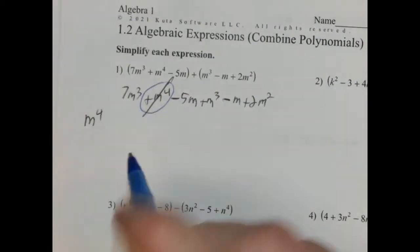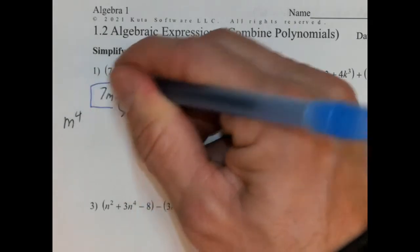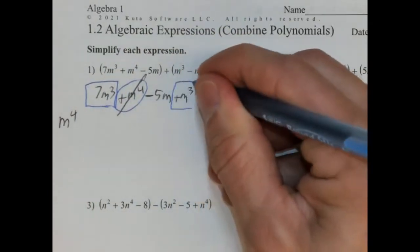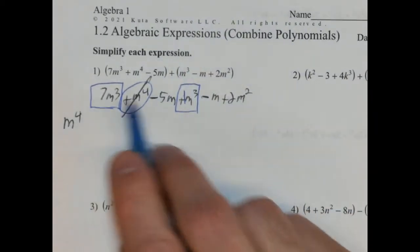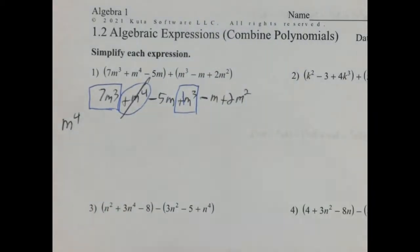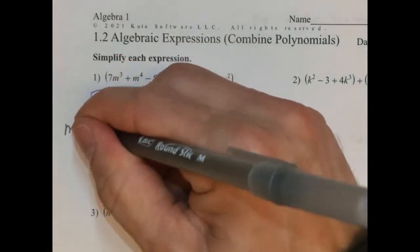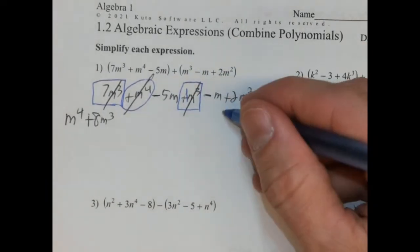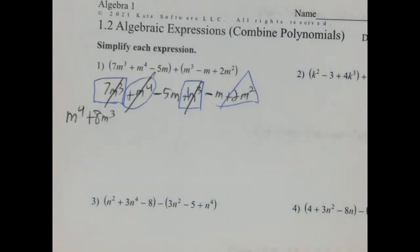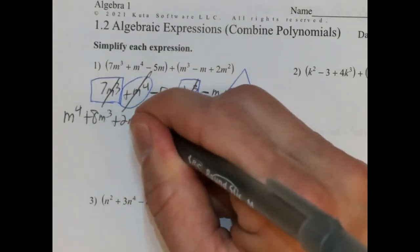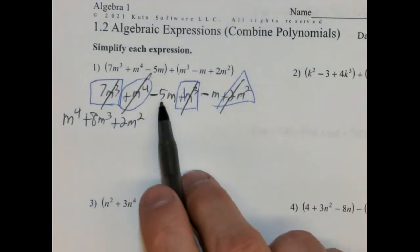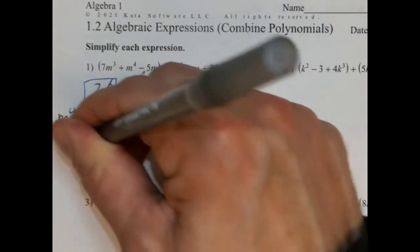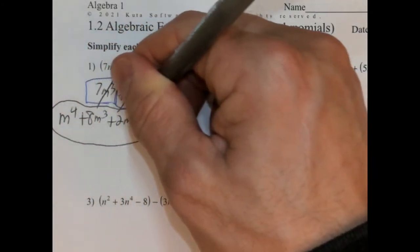Let's see if we have any m to the thirds, which we do. So 7m cubed and then positive m cubed. That positive m cubed is actually positive 1m cubed, so 7 plus 1 is 8. So we're going to have plus 8m cubed. Cross those out. And we have positive 2m squared — there's no other one — so plus 2m squared. And now we have negative 5m and negative m, so negative 5 minus 1 is negative 6m. And that's our answer.